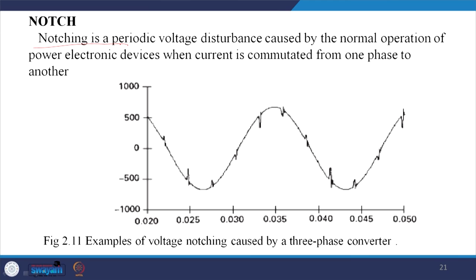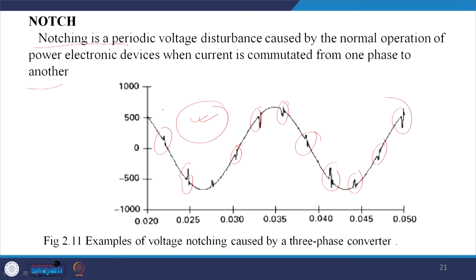Moving on to notches: notching is a periodic waveform disturbance caused by the normal operation of power electronics devices when current is commutated from one phase to another. This can be seen clearly in most converters. After every 60 degrees, one pair of thyristors is conducting and then it switches to another pair — each such commutation event produces a notch. This waveform distortion requires elimination from both a power electronics and a power quality perspective.